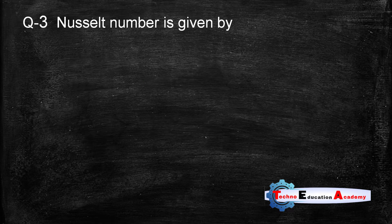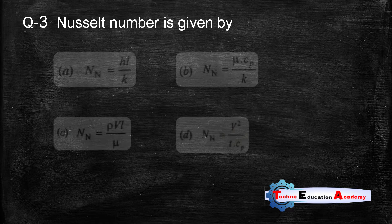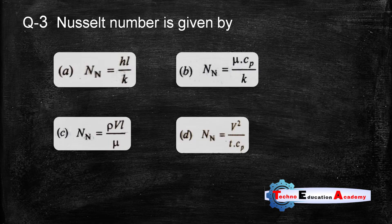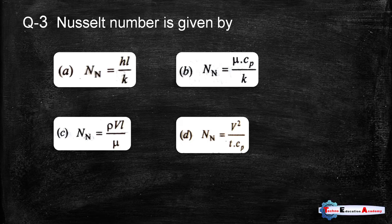Question number three: Nusselt number is given by. The equation of Nusselt number is hL/k. You can remember this by a trick — think of the movie Hulk: Nusselt number equals hL/k, like 'Hulk'. So the right answer is hL/k. Question number four coming up.